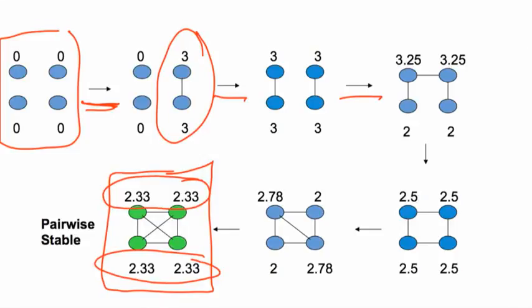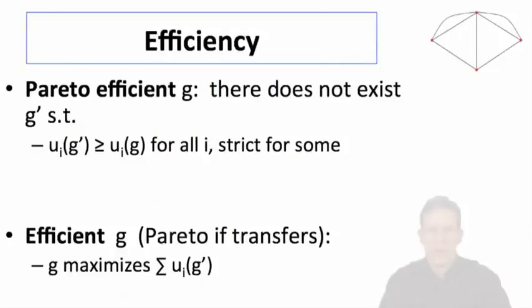Now the interesting thing is they're worse off than they would have been had they stopped here. The difficulty is this is not stable in the sense of individual incentives. People would have incentives to move on from that.